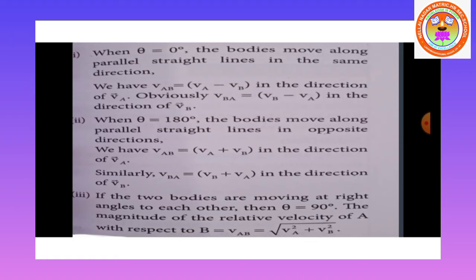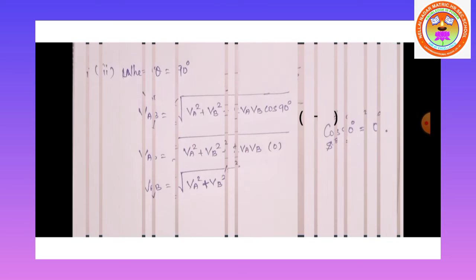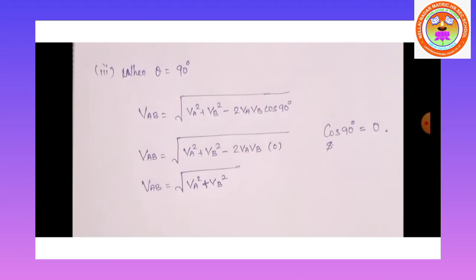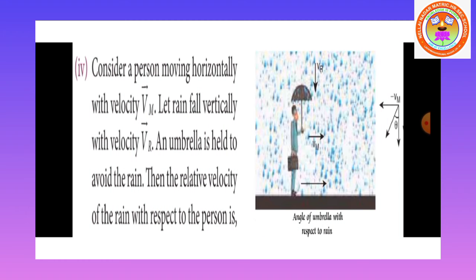When the two bodies move at right angles to each other, θ = 90°. Since cos 90° = 0, the magnitude of the relative velocity is: vAB = √(vA² + vB² − 2·vA·vB·0) = √(vA² + vB²).